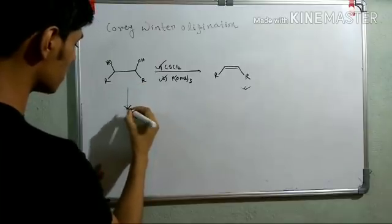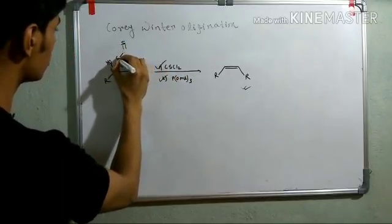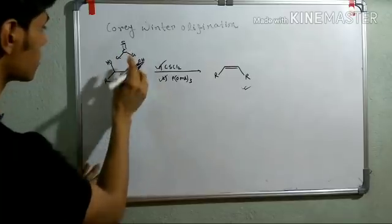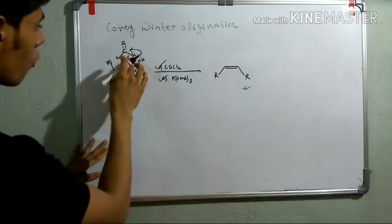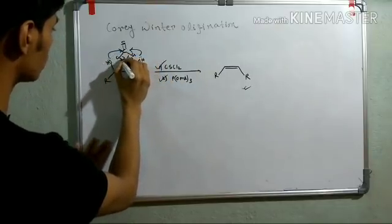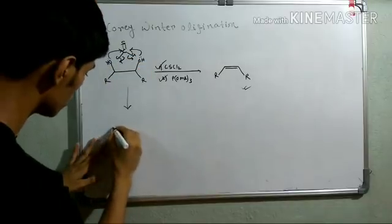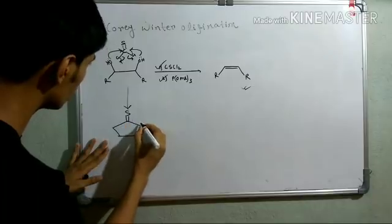The mechanism of the reaction is very simple. As you can see, this is your CSCl2. So, when this diol reacts with this CSCl2, it will first attack here to kick off one chlorine, and the other OH group will also attack here, it will also kick off another chlorine atom. So, now this cyclic intermediate will be created.